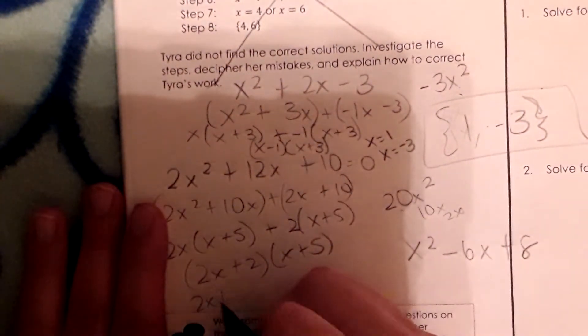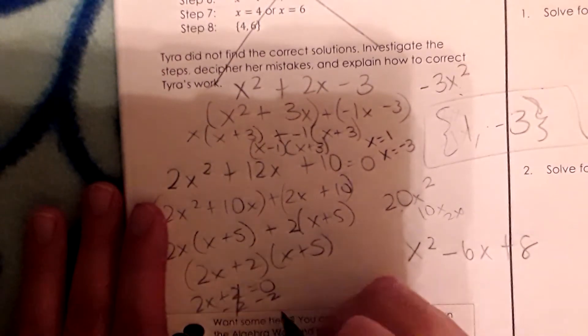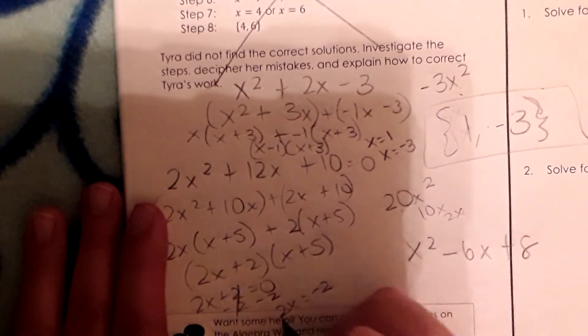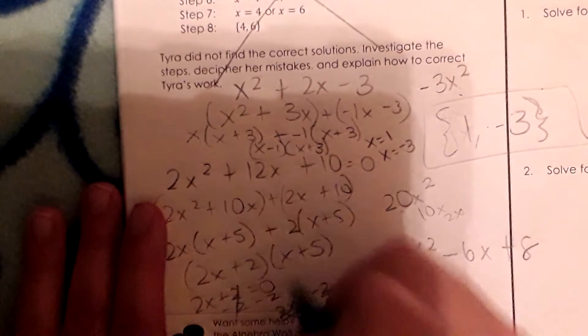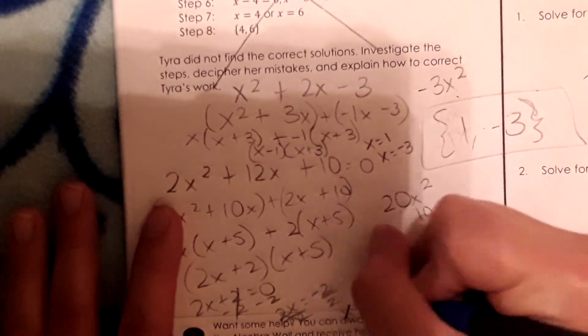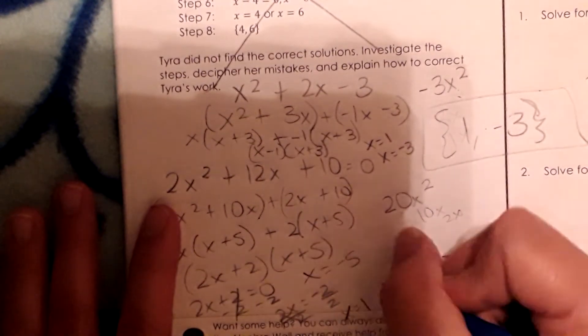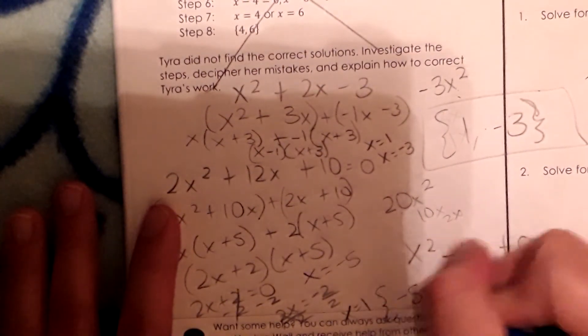Then I can set both of these equal to 0. I get x equals negative 1 here. Where am I going to put it? x equals negative 1. And then this will equal x equals negative 5. So our bracket would have negative 5 and negative 1.